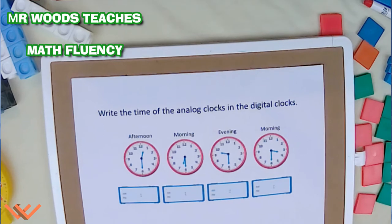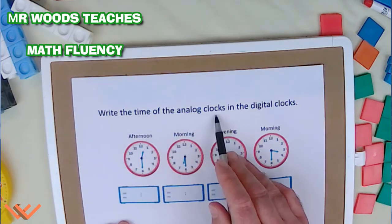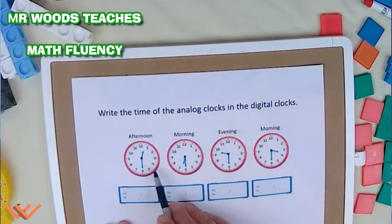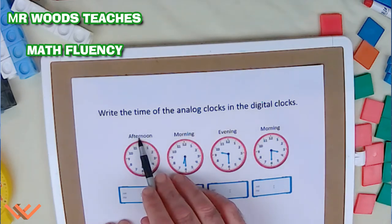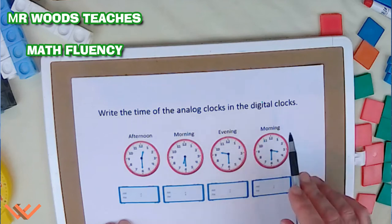Let's take a look at some more clues. Here we are with some more clues. Again, at the top it says, Write the time of the analog clocks and the digital clocks. These are analog clocks and these are digital clocks. But wait, we have some more clues. This says afternoon, this says morning, this says evening, and this says morning.